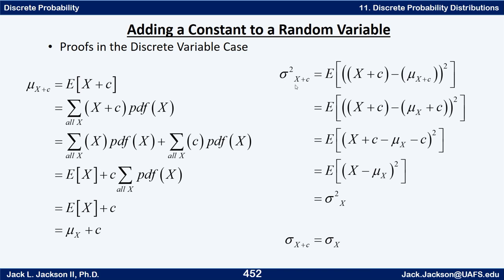For the variance, sigma squared of x plus c equals the expected value of (x plus c minus mu of x plus c) squared. Since mu of x plus c equals mu of x plus c, distributing the minus gives x plus c minus mu of x minus c. The c's cancel, leaving the expected value of (x minus mu of x) squared, which is exactly the variance of x. So the variance of x plus c equals the variance of x, and therefore the standard deviation of x plus c equals the standard deviation of x.